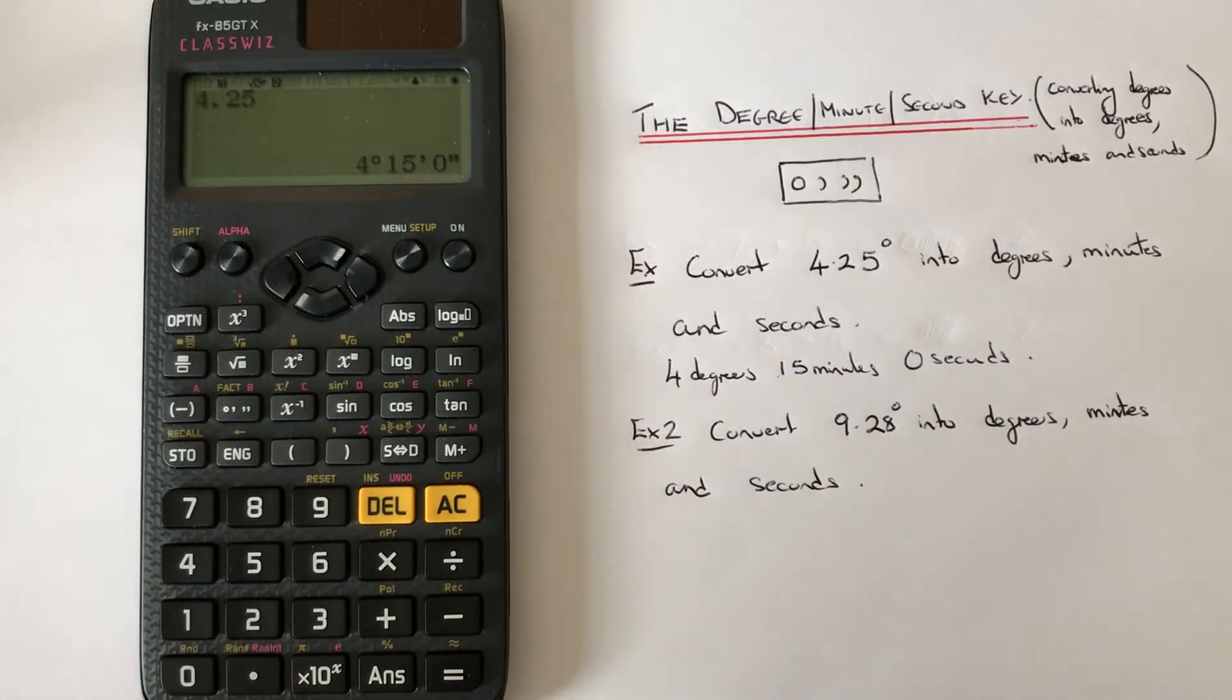Okay, so let's have a look at the second example. So this time we've got to convert 9.28 degrees into degrees, minutes and seconds.